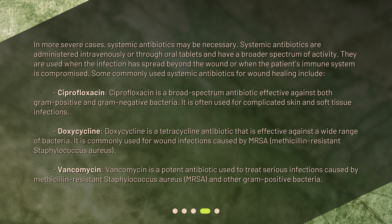Some commonly used systemic antibiotics for wound healing include Ciprofloxacin. Ciprofloxacin is a broad-spectrum antibiotic effective against both gram-positive and gram-negative bacteria. It is often used for complicated skin and soft tissue infections.